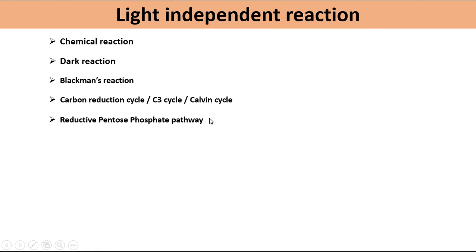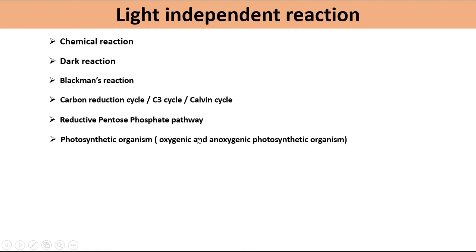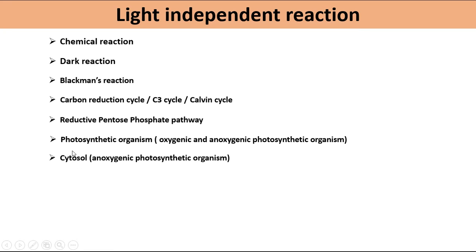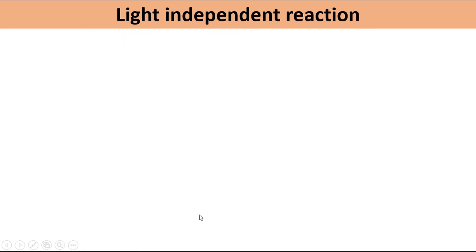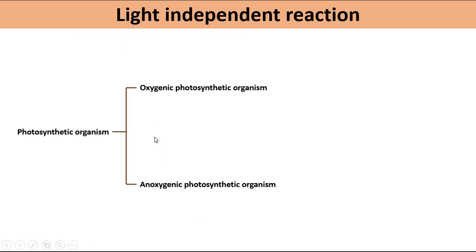Calvin cycle occurs in all photosynthetic organisms, both oxygenic and anoxygenic. In anoxygenic photosynthetic organisms it occurs in the cytosol, while in oxygenic photosynthetic organisms this cycle occurs in the stroma of the chloroplast.